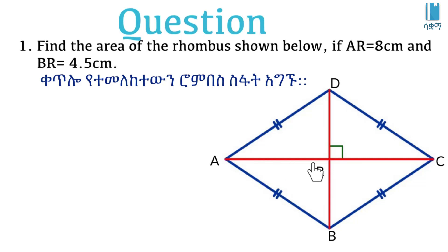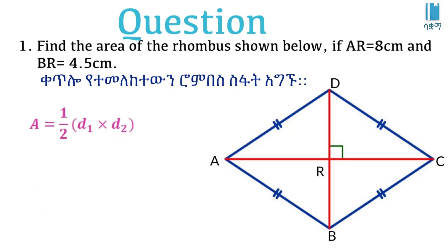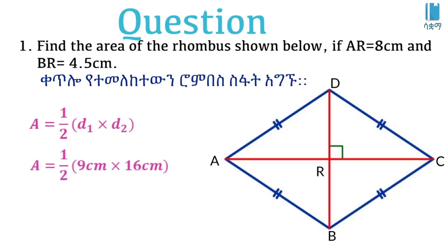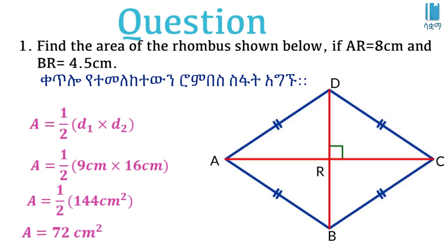So the second point would be calculated. We can get the area: the size of the area of the rhombus is 70 square centimeters.